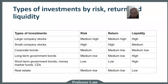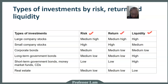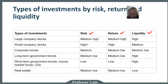Here's a table describing what the graph shows. As expected, large company stocks have medium risk, medium return, and high liquidity — in the U.S. this often refers to the S&P 500, the largest 500 stocks traded in the U.S. stock market. Small company stocks — companies you may or may not have heard of — have much higher risk but also much higher return, and they are less liquid.